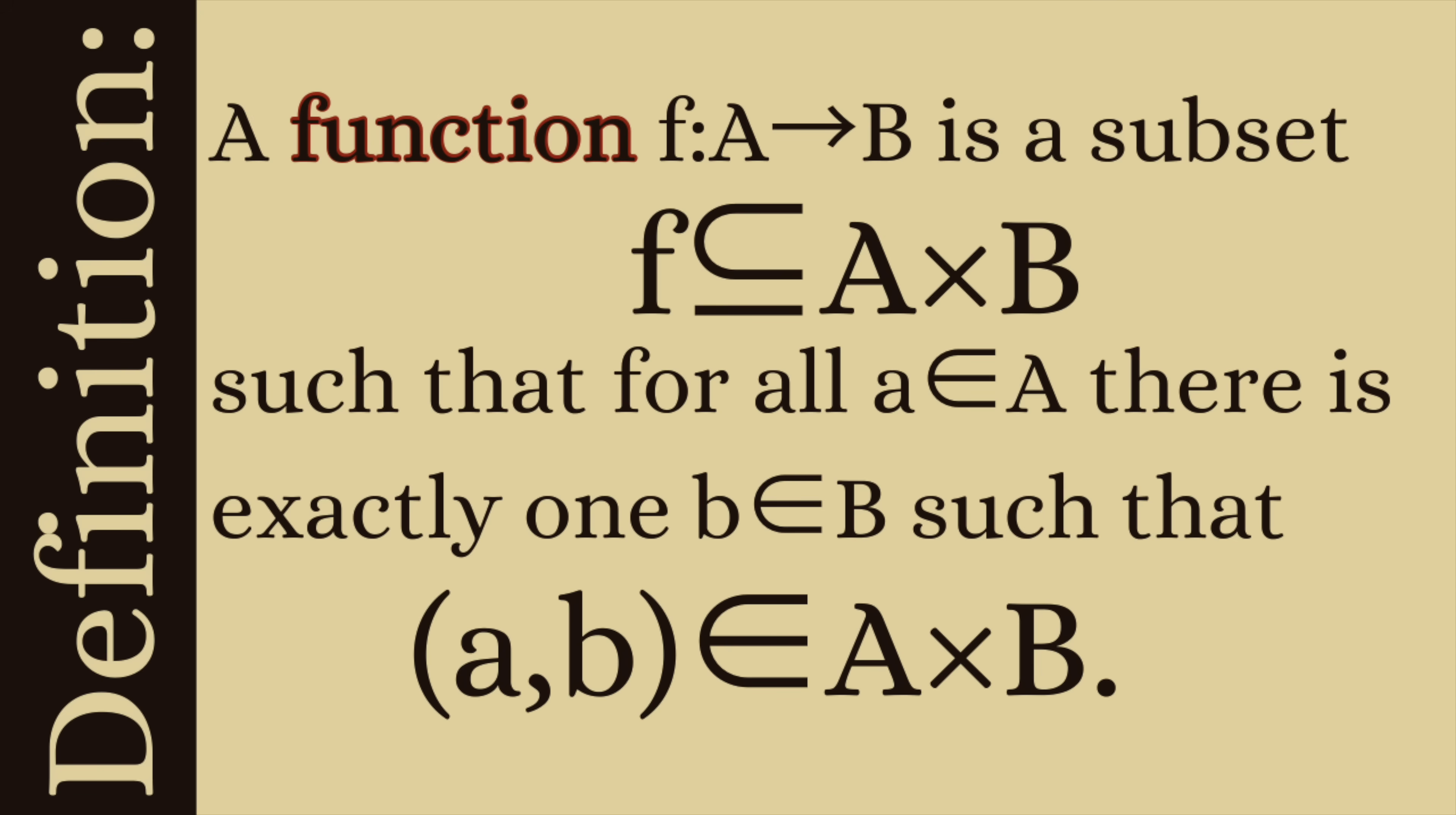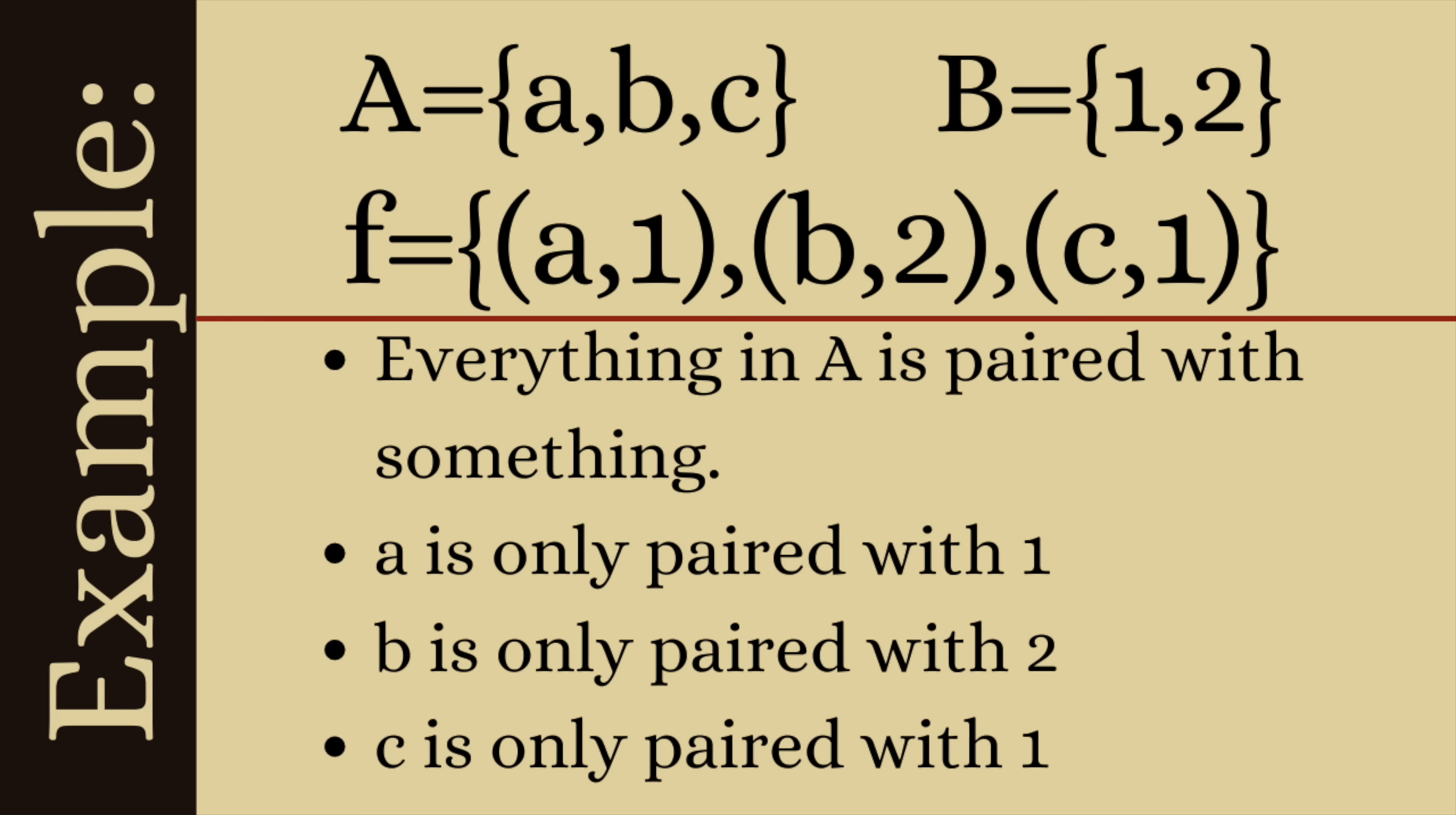So let's look at some examples. First off let's say our set A is {a,b,c} and our set B is {1,2,3,4} and then our subset of A cross B is going to be called f and that'll be made up of the ordered pairs (a,1), (b,2) and (c,1).